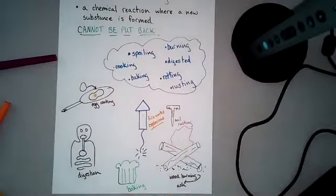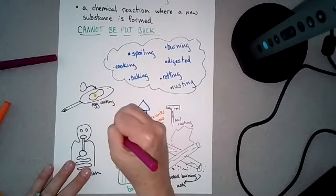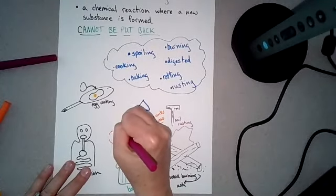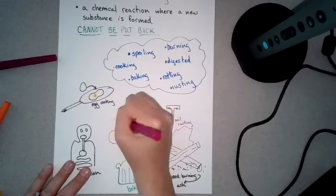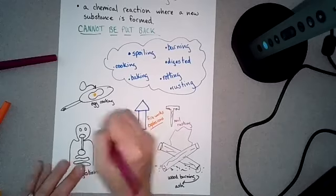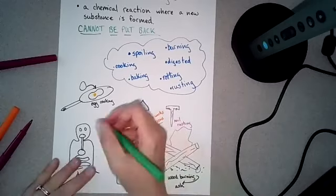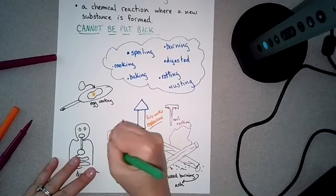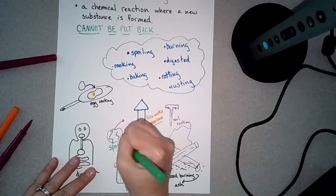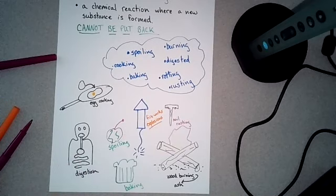Last one, draw an apple. Ooh, that is the ugliest apple I have ever drawn. Draw an apple, and then put like green moldy stuff on it. That is spoiling. When that happens, it's a chemical reaction, and it can never be put back. All right, love you guys, bye.